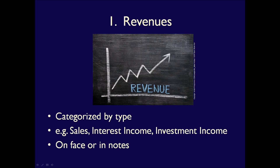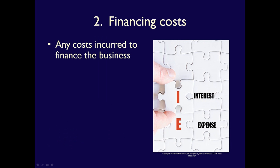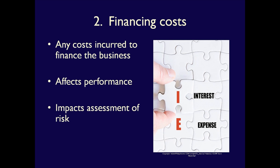Revenues must be categorized by type. The second line item is financing costs, which must be reported separately. What did it cost the company to finance their growth, expansion, and day-to-day operations? The cost of financing may seriously affect the business's performance and will affect the assessment of how risky the business is with regards to providing additional capital, such as a loan. Because it is so important, it must be included as a separate line item on the face of the statement.